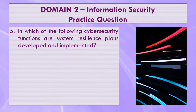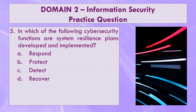Number five: in which of the following cybersecurity functions are system resilience plans developed and implemented? A — respond; B — protect; C — detect; or D — recover. Respond means forming activities to take action regarding a detected cybersecurity event. Protect means developing safeguards to ensure delivery of infrastructure services. Detect means developing activities to discover and identify the occurrence of a cybersecurity event. Therefore, the correct answer is D — recover. During the recovery phase, system resilience plans are developed and implemented, and any impaired or damaged services due to a cybersecurity event are restored.